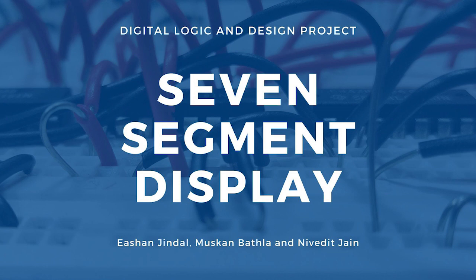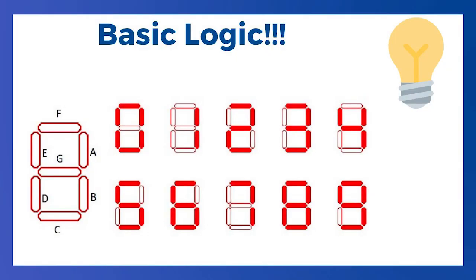The very idea of a 7-segment display is that 7 LED strips are preset and we glow only the required strips at a time. Consider the figure on your screen. To display 0, it is enough to turn off LED strip G and keep others glowing. Similarly, to display 8, turn on all LEDs.